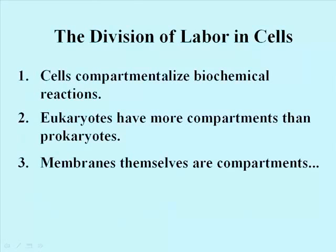The smooth endoplasmic reticulum is also a storage site for calcium ions in all cells, but especially in skeletal muscle where we will see an elaboration of SER into something called sarcoplasmic reticulum. You should be getting the impression that different parts of a cell perform different tasks. Eukaryotic cells have more spaces and places to compartmentalize different chemical reactions. Even membranes themselves, like the plasma membrane, can be a separate and distinct compartment performing chemical reactions not found elsewhere in the cell.